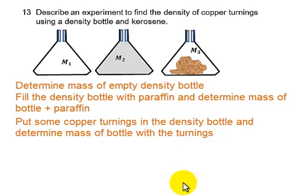Why do we need the mass of the copper turnings? We want the density of copper turnings. In order to calculate the density of copper, we need to find the mass of the copper and its volume. So the challenge here is how do we determine the volume or the space occupied by the copper turnings? This is solved in the fourth step.